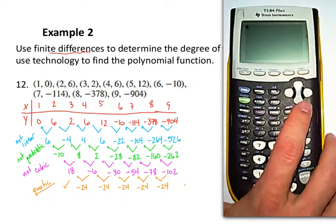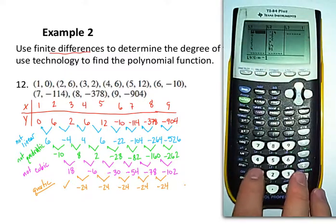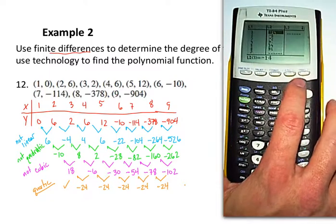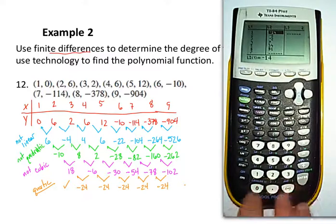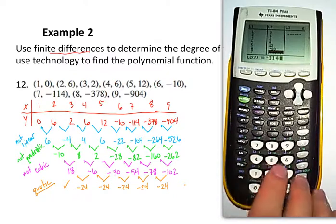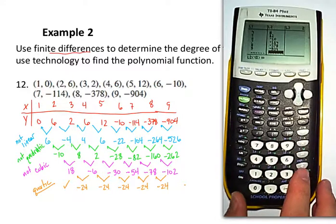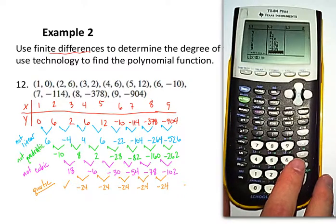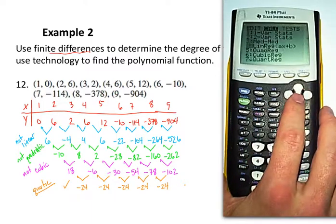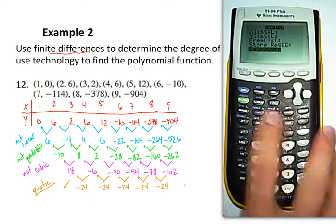So I'm going to go back to the stat menu. I'm going to edit the stats. And I'm just going to type over what I had originally. So before we started with x equaling negative 1. Now we start with 1. And we're just going to count our way up to 9. Then the y column, our list 2, we go from 0 to 6 to 2 to 6, 12, negative 10, then negative 114, negative 378, and negative 904. Let's go stat, calculate. And I know this is a quartic regression. So this will be option 7. Hit enter.